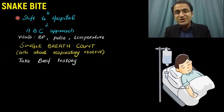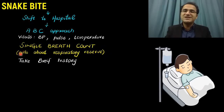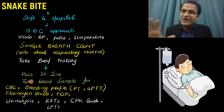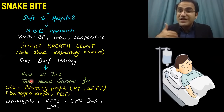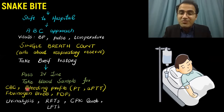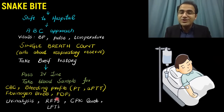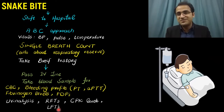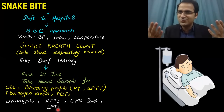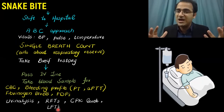After shifting the patient to hospital, taking vitals, single breath count, history, and knowing the type of snake, you can now understand what investigations to order. Order bleeding profiles, CBC, fibrinogen, and fibrinogen degradation products to assess coagulopathy in hemotoxic snake bites. Do urinalysis to check for hematuria, RFTs for Russell's viper, CPK levels, and LFTs. These investigations now make sense because you understand how these snakes can kill a patient.